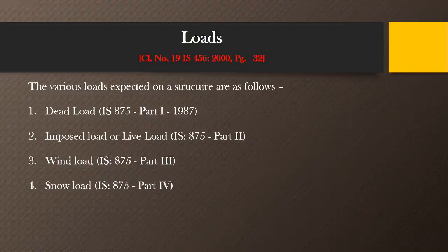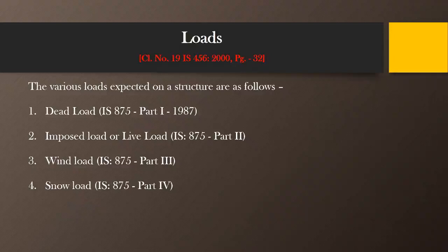Then the snow load. Snow load means whenever and wherever snowfall occurs, that load comes on the structural components — particularly the roofs — and is again transferred to the columns and then to the foundation. So while designing all these components we have to consider the snow load. For this, it is recommended to use IS 875 part 4. It is to be noted that snow load is to be considered only in regions wherever snowfall is possible; in the rest of the country it is not required.